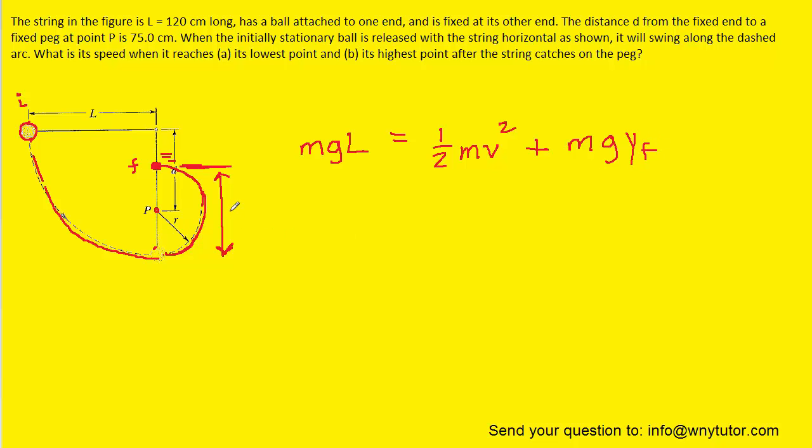We need to find that final height, which becomes a little challenging, but looking at the diagram carefully, it's not too bad. This length is the entire length of the string, 1.2 meters, and this distance was marked d in the original figure, which is 0.75 meters. If we subtract 1.2 meters by 0.75 meters, we get this height, which is 0.45 meters.